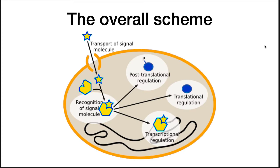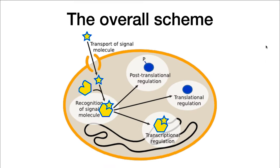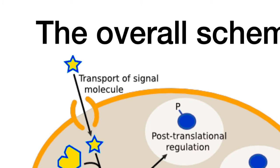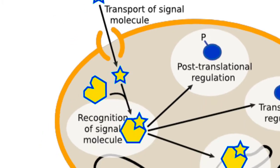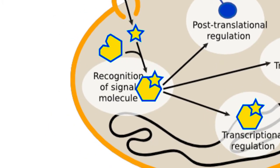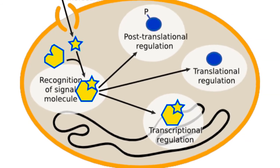All regulation of microorganisms begins with some signal, denoted by the yellow star, outside in the environment. This signal indicates something important in the environment to which the microbe will want to respond. In some manner, the signal is transmitted inside the cell, recognized, and then alters gene expression.